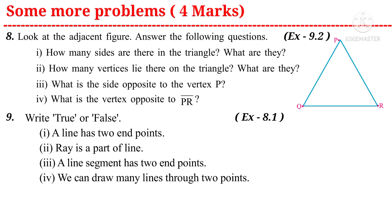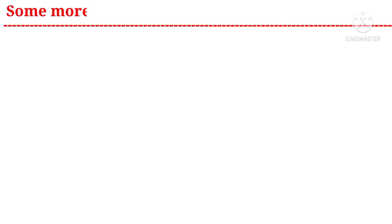Question nine: write true or false — (1) a line has two end points; (2) a ray is a part of a line; (3) a line segment has two end points; (4) we can draw many lines through two points — a question from the eighth chapter.